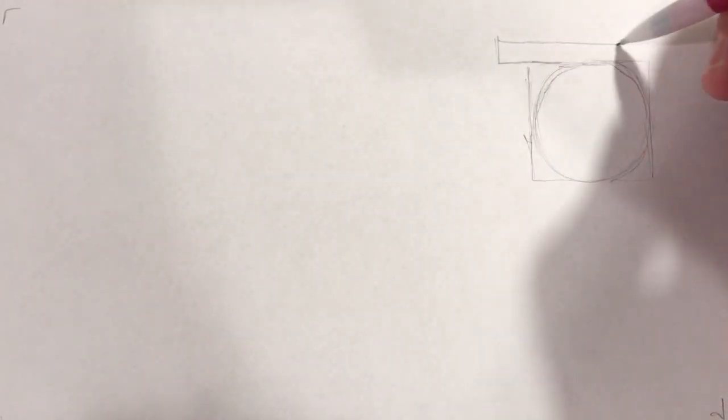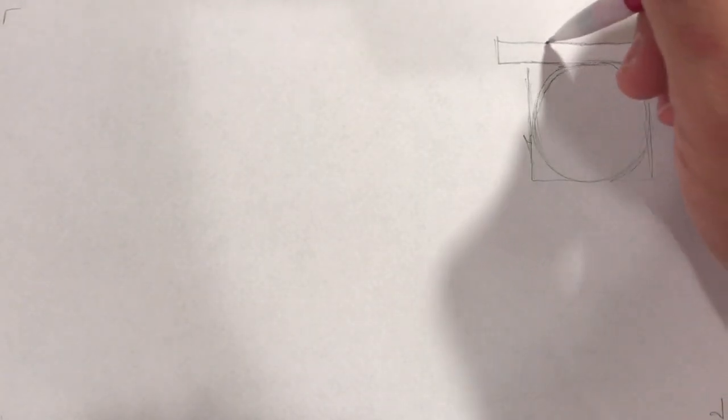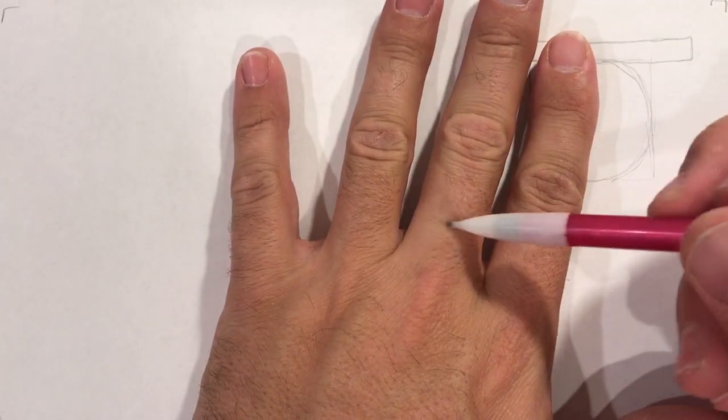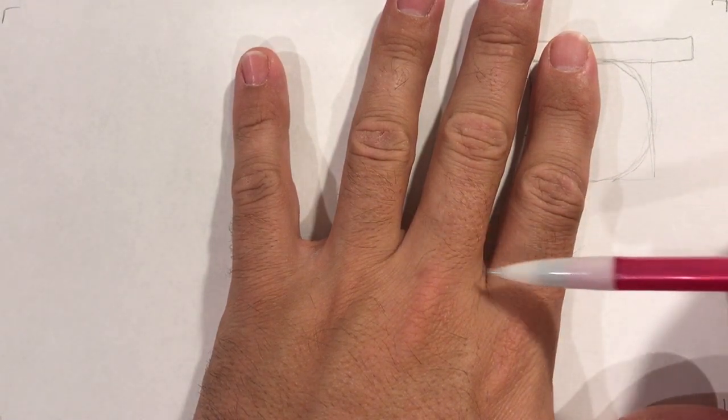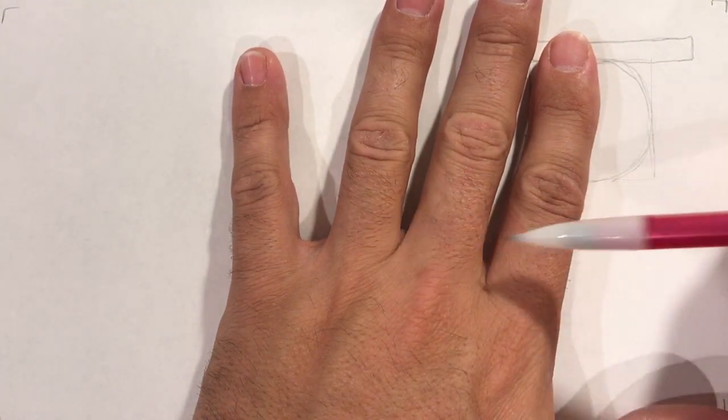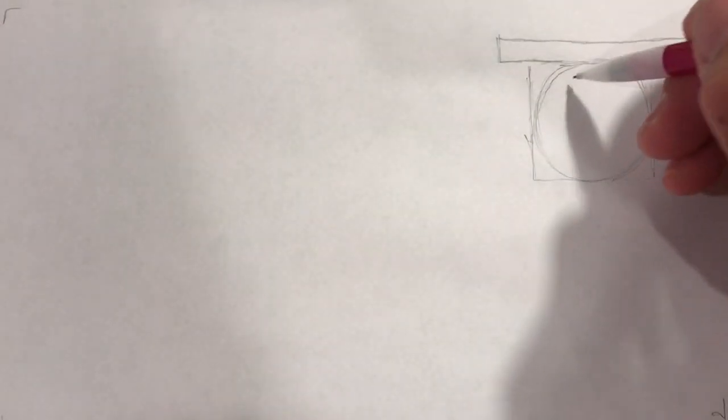All we're going to do, it's actually just going to have a bar across. So actually, when it sits on your finger, it'll sit right here, but there will be a bar going across to your fingers. Just kind of a modern ring.